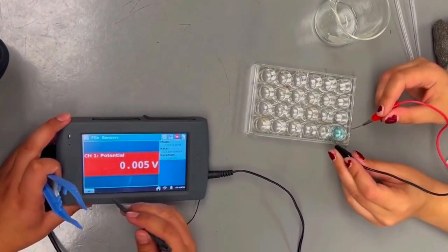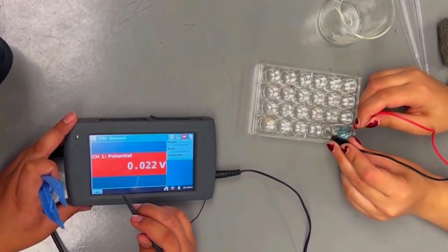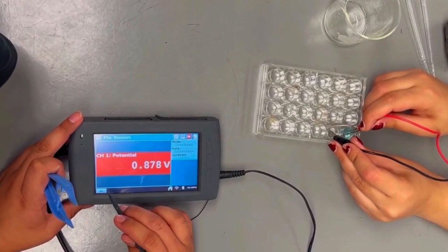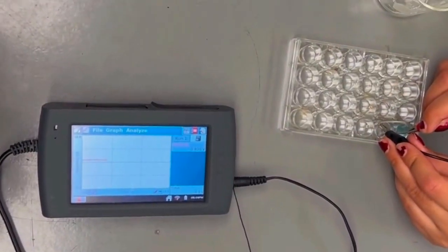Connect the electrodes to the voltage probe. Submerge the electrodes in their corresponding solutions. To begin data collection, press the play button at the bottom of the screen.